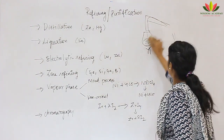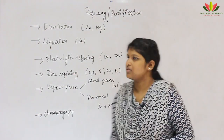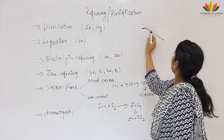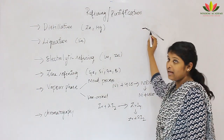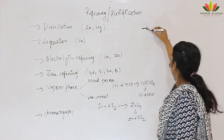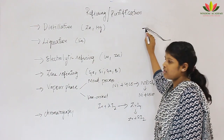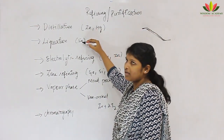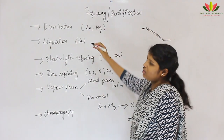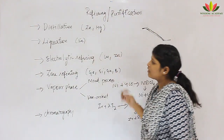The second method is liquation. Similar to hydraulic washing, the substance is placed on a slope that is heated at high temperature. Metals with a low melting point — like tin — flow down the slope, while higher-melting impurities remain on the surface. So liquation is used for low melting point metals.